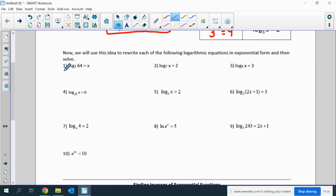Log base 2 of 64 equals x can be rewritten as 2 to the x equals 64. Log base 7 of x equals 2 means 7 squared equals x. Log base 6 of x equals 3 means 6 to the 3rd equals x.